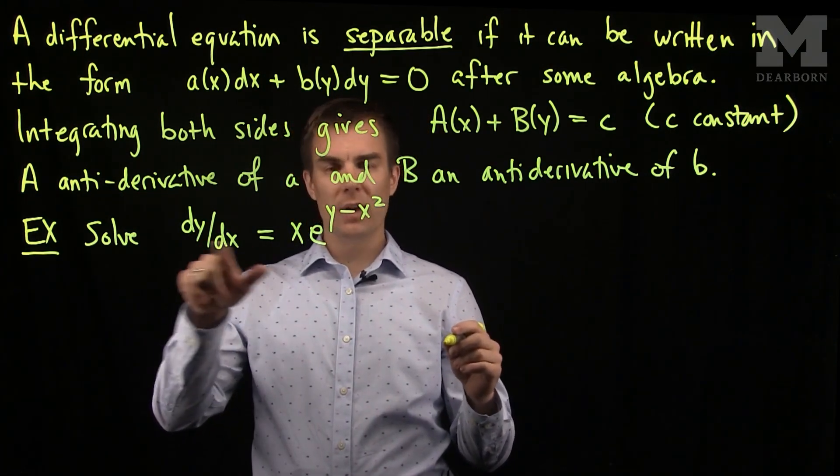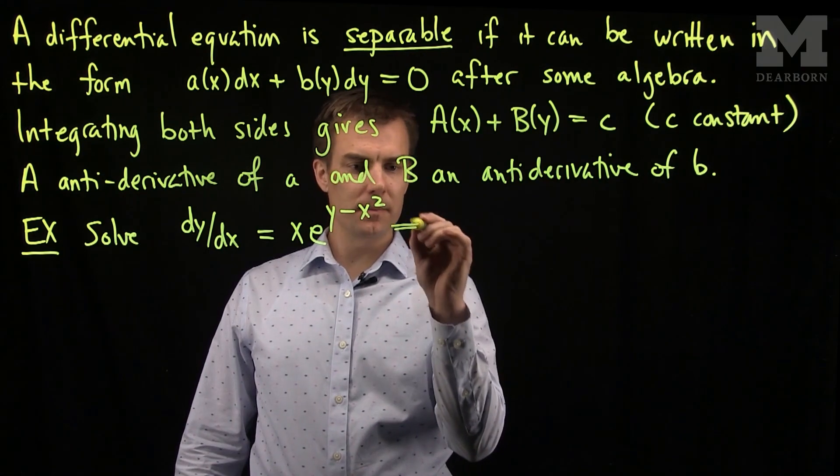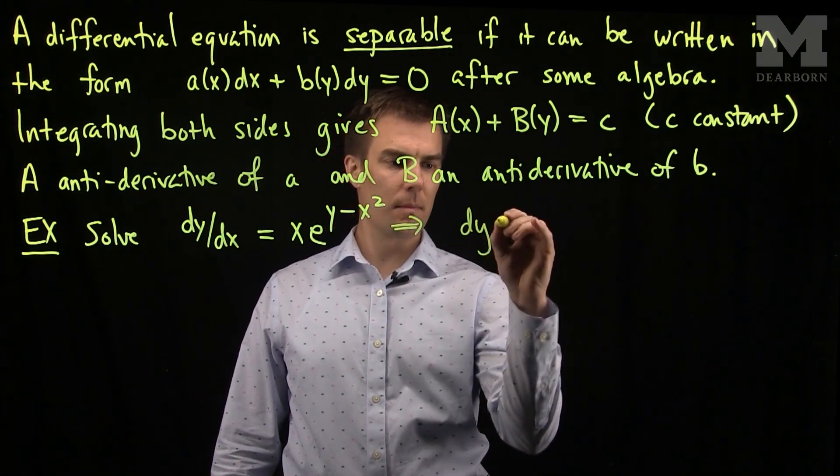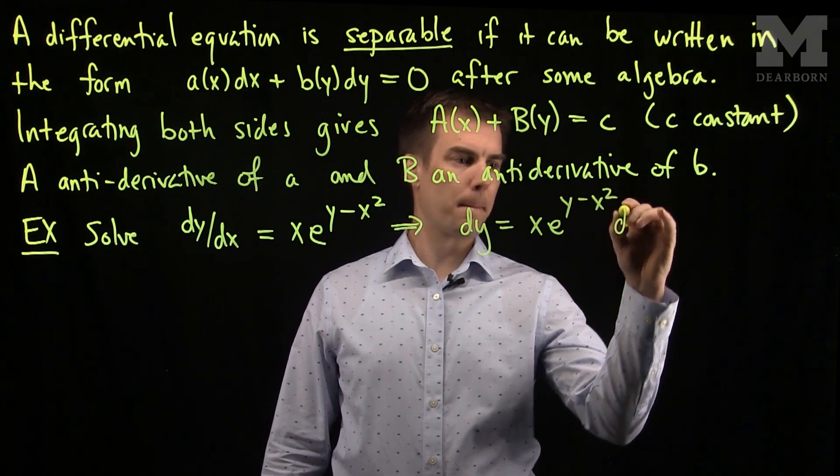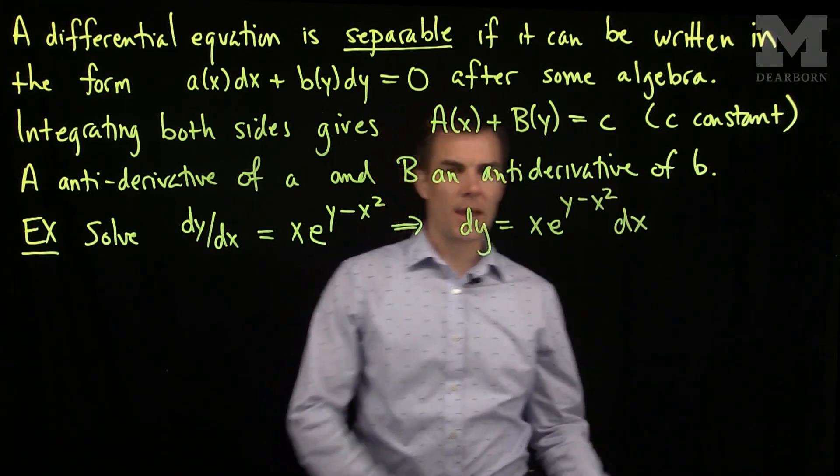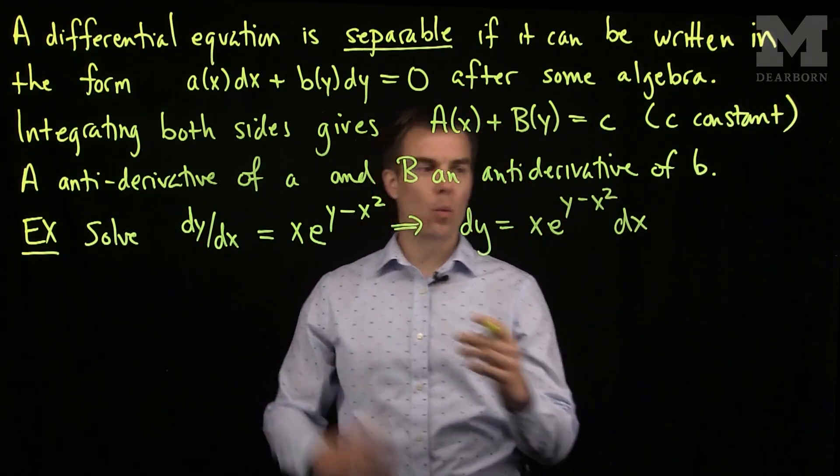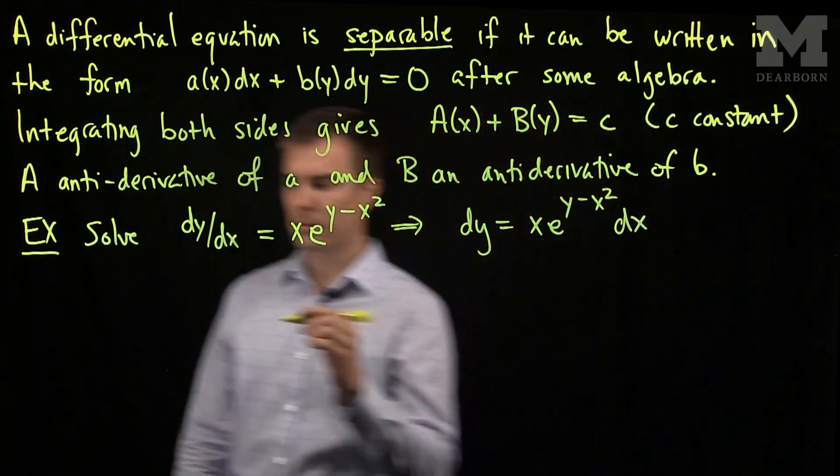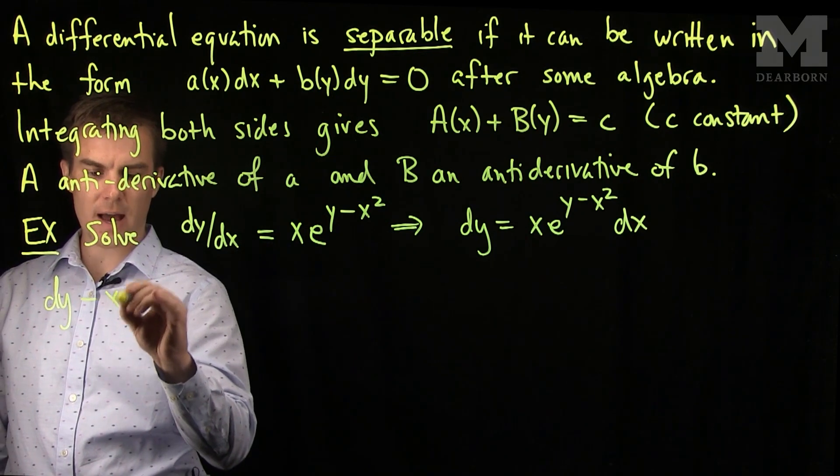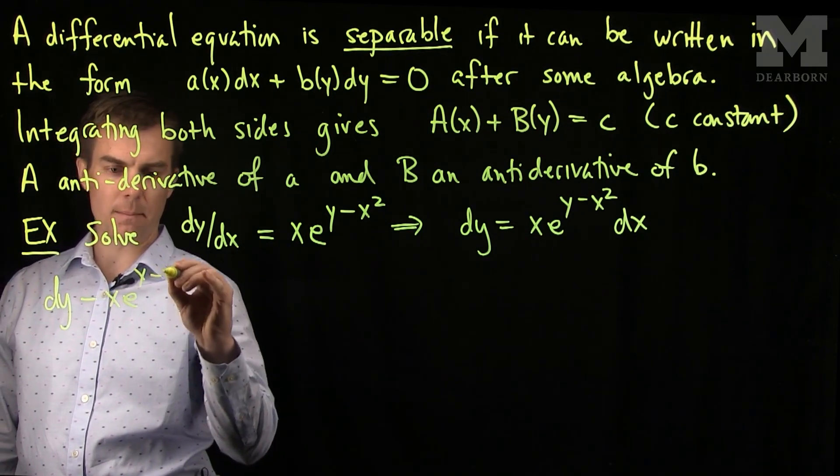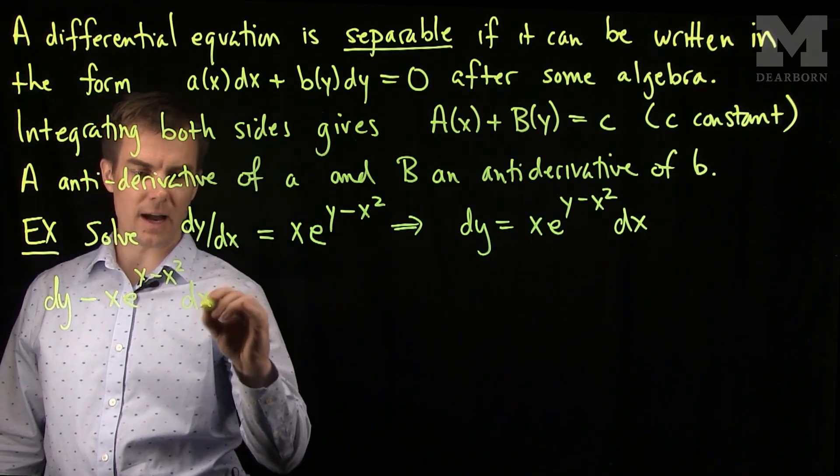First, we'll multiply both sides by dx and put everything on one side of the equation. So, I'll have dy - xe^(y-x²)dx = 0.